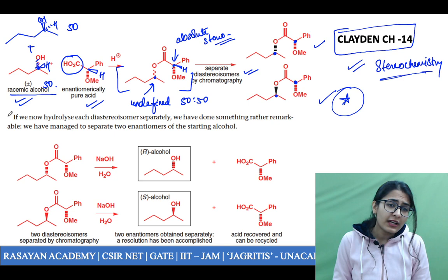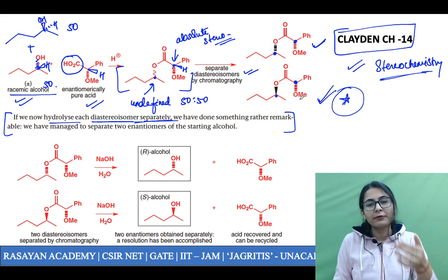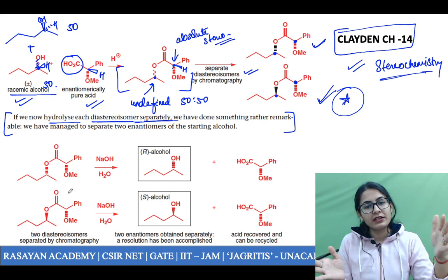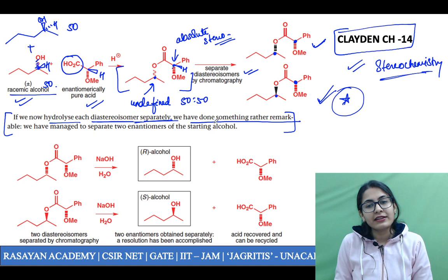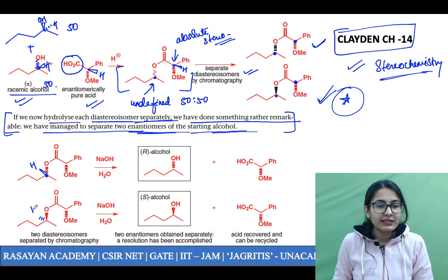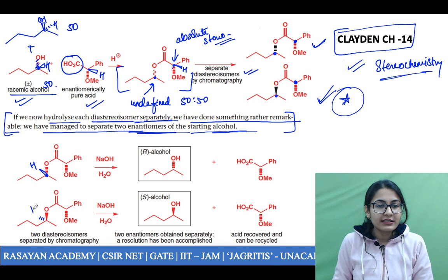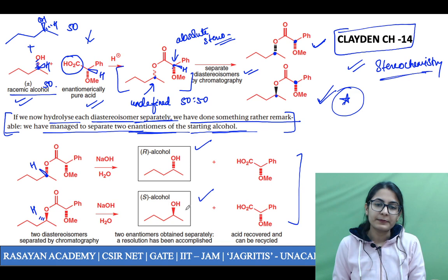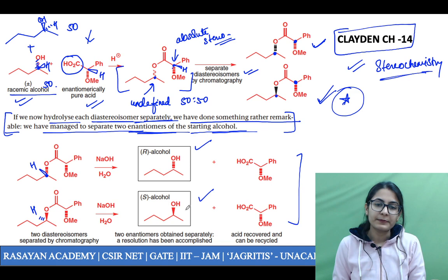If we now hydrolyze each diastereomer separately — you have taken this diastereomer, and this is another one — they are going to have different melting and boiling points. If you are able to hydrolyze them, you have separated both of them. We have managed to separate two enantiomers of the starting alcohol — this is a method of resolution. You hydrolyze these diastereomers separately to give you the R alcohol and the S alcohol. The pure acid is collected once again and can be recovered for further resolution. This has been asked in your GATE 2005 examination.